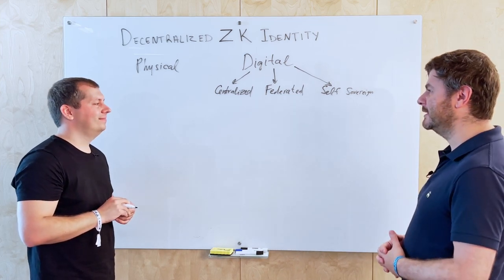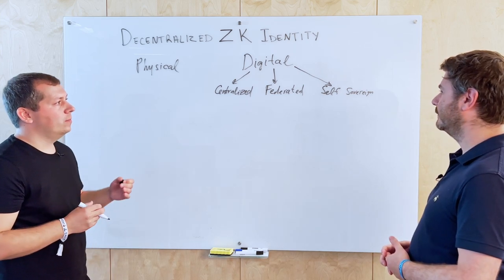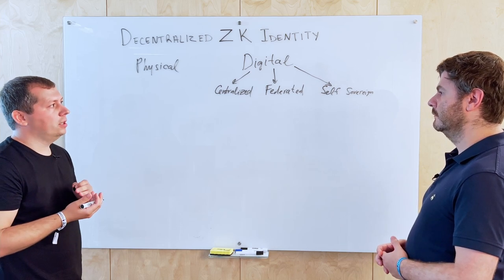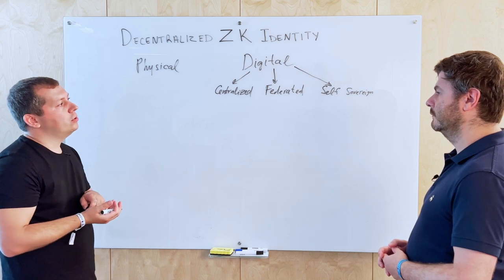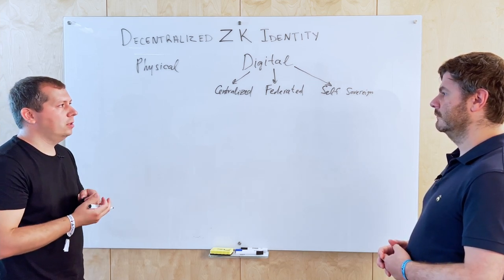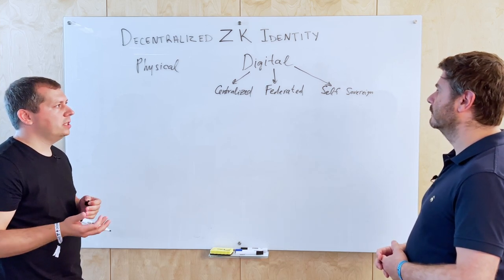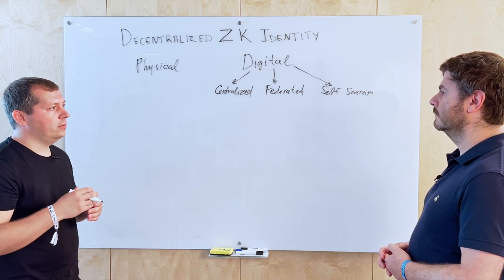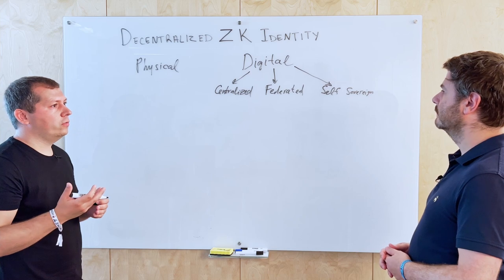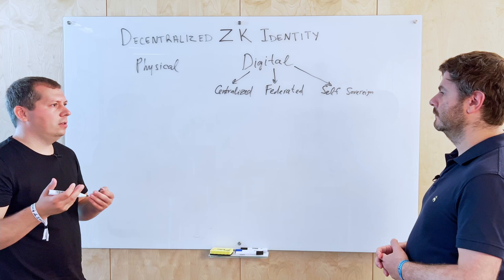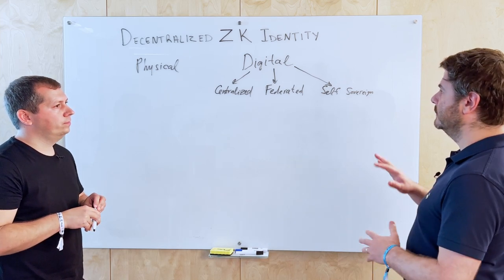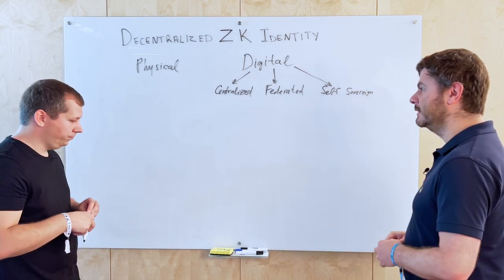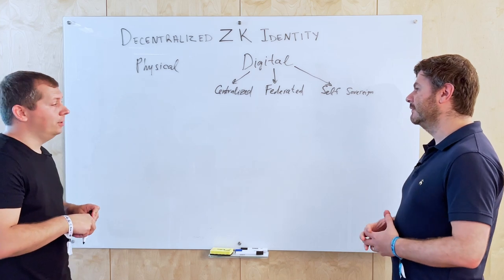For decentralized identity, the user is at the center. They receive identity claims and store them in their own wallet, and can share them whenever required — maybe to access something, to publish a tweet, or for some other purpose. It could be a document or just a statement. Self-sovereign identity combines the convenience of digital identity with the privacy properties of physical identity — kind of the best of both worlds.